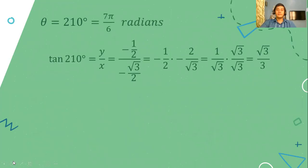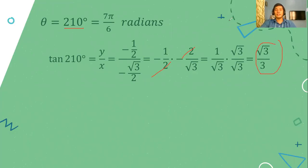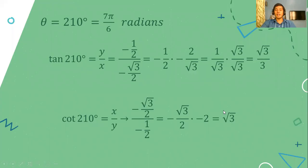For the tangent function, we have y divided by x: negative 1/2 divided by negative √3/2. We cancel the 2s, and negative times negative is positive, giving 1 over √3. We rationalize to get √3/3. And for cotangent, we simply get the reciprocal of √3/3, which is √3 — also positive. Remember that in the third quadrant, only the tangent and cotangent functions are positive.